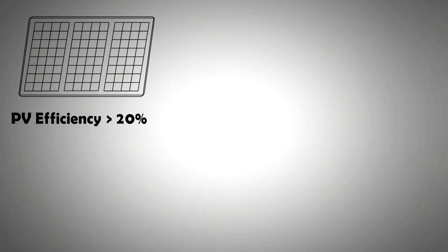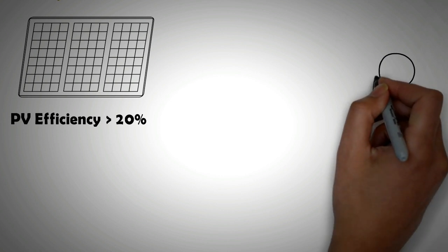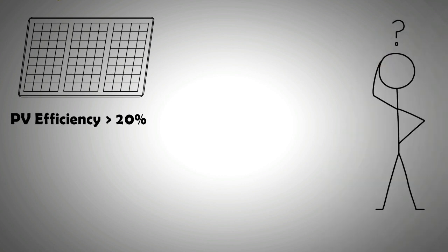When compared to high-performance PV modules with efficiencies over 20%, the current efficiency of STEG is almost four times lower. This brings us to the question: why is this technology being pursued when even at its full potential it will not be as efficient as current PV systems?